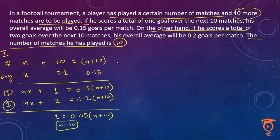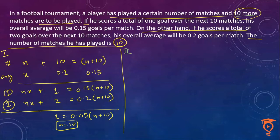The final answer remains 10. My second method is actually the same thing but with a lot less writing. We have to understand that if these 10 matches — in which two goals were scored — are to replace the 10 pending matches where one goal was scored, the overall average increases by 0.05.